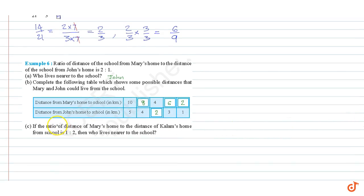If the ratio of distance of Mary's home to the distance of Kalam's home from the school is 1 is to 2, then who lives nearer to the school? We know that 1 is less than 2. So Mary lives nearer to the school. Our answer is Mary.